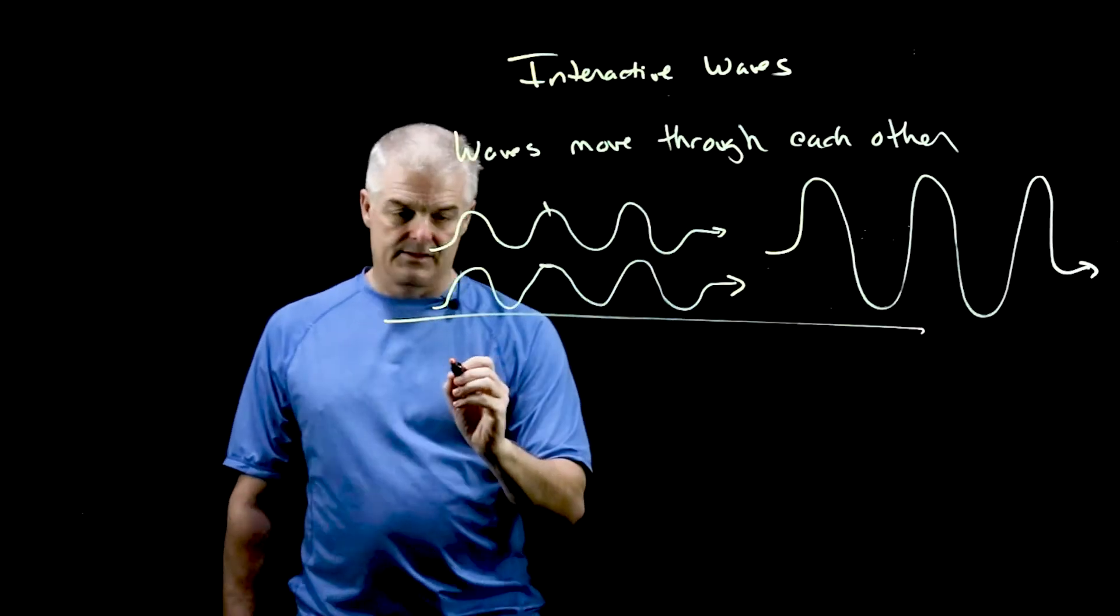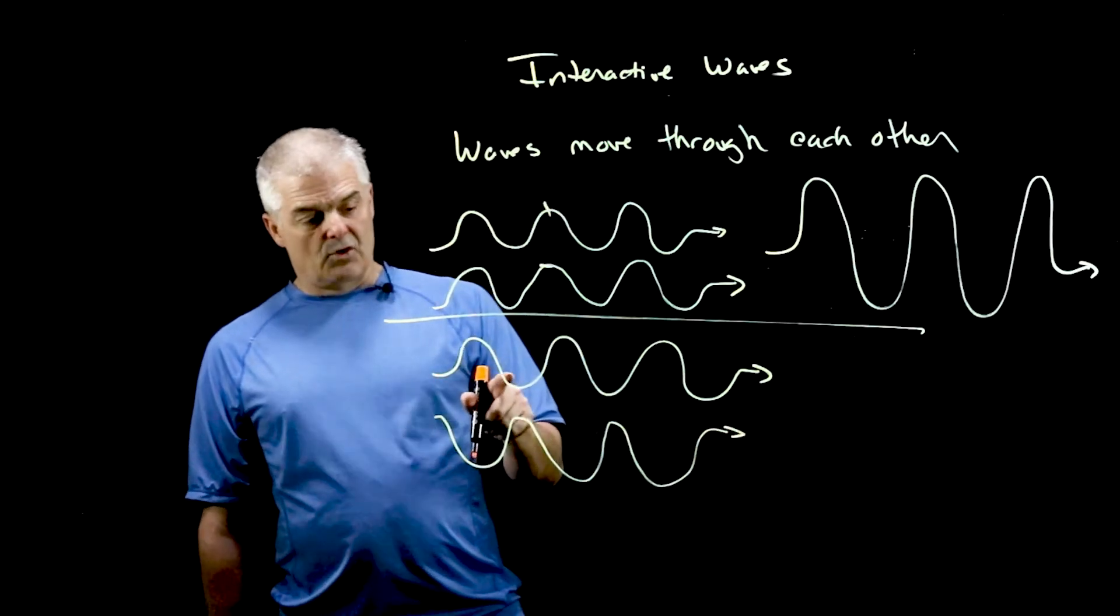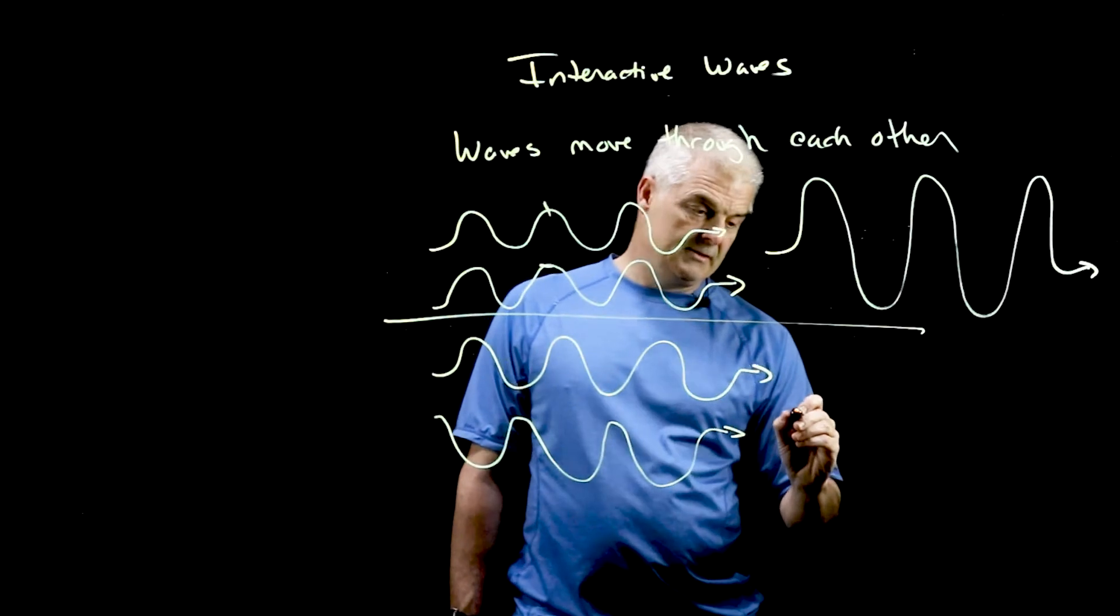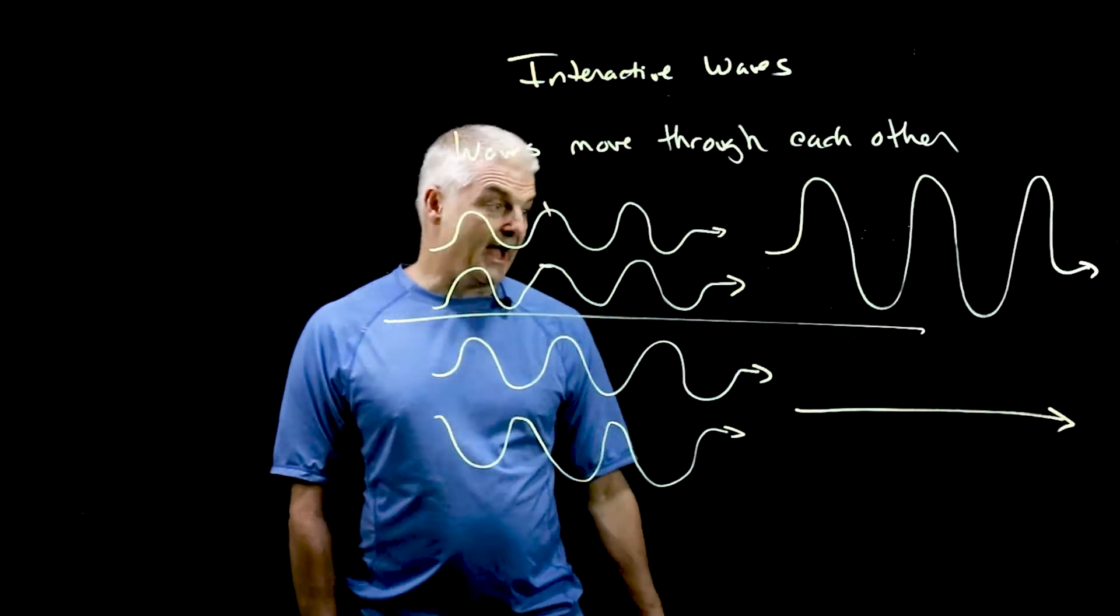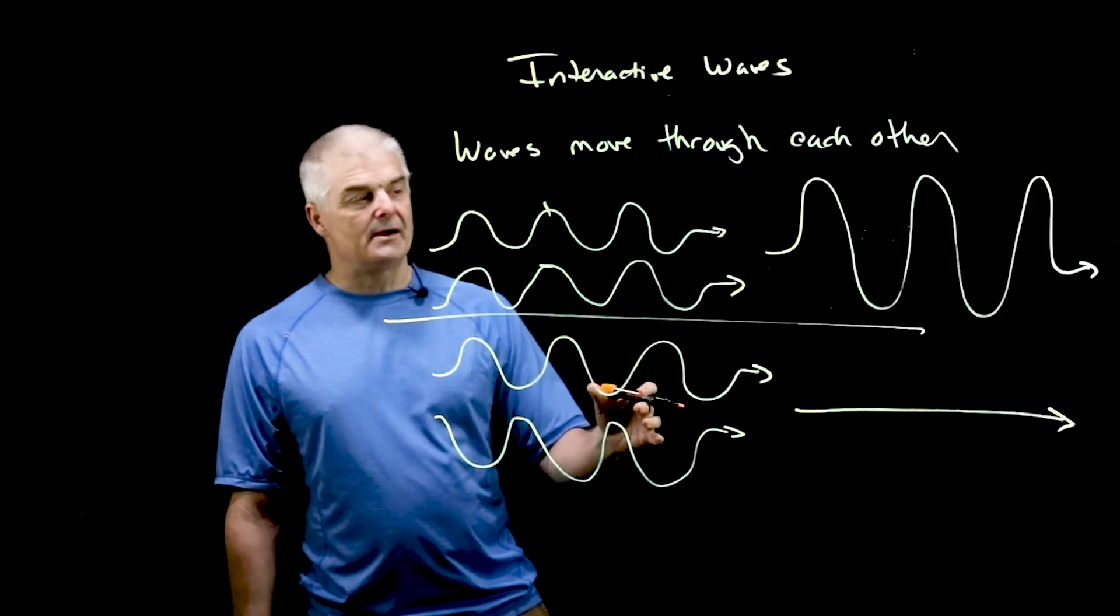But you can have another instance. Sketch this, guys. Opposite waves, where the crest and the troughs are opposite. You know what your answer is when you put these two together? That. No wave. They cancel each other out.